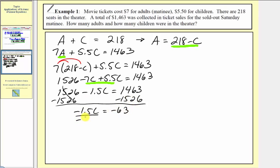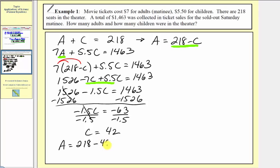Dividing both sides by negative one point five, we get C equals negative sixty three divided by negative one point five, which equals forty two. So there were forty two children's tickets sold, meaning forty two children were in the theater. Using the equation A equals 218 minus C, we get A equals 218 minus 42, which equals one hundred seventy six. So there were forty two children and one hundred seventy six adults in the theater.